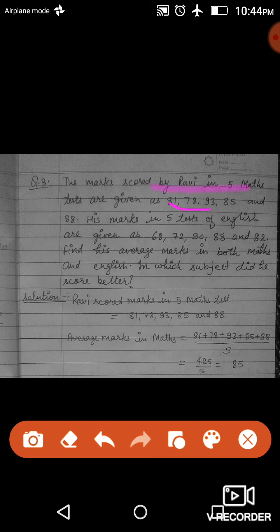Five maths test marks and five English test marks. In which subject are the best marks? First of all, you will find maths and English, two subjects' average marks. Ravi scored marks in five maths tests: 81, 78, 93, 85, and 88. Average marks in maths is equal to, we will find maths average.